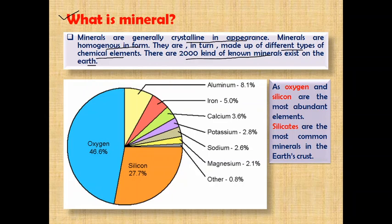I am going to explain those chemical elements which form the minerals, and these chemical elements are an important part of the earth crust — they occur majorly in the earth crust. As you can see in the pie diagram: Oxygen, Silicon, Aluminium, Iron, Calcium, Potassium, Sodium, Magnesium, etc. are the chemical elements that make up different types of minerals and also occur in the crust of the earth.